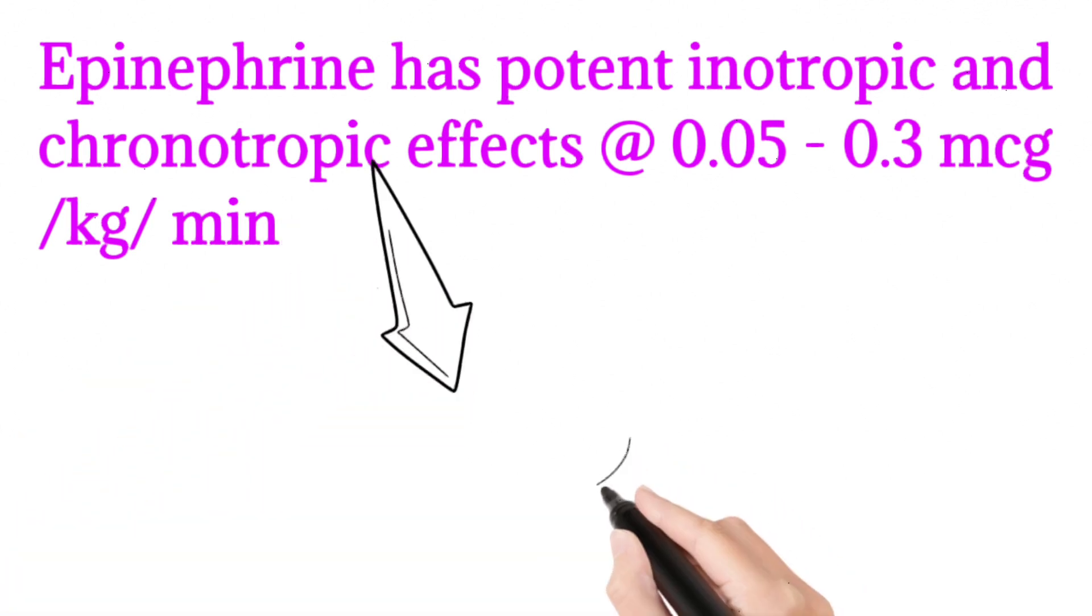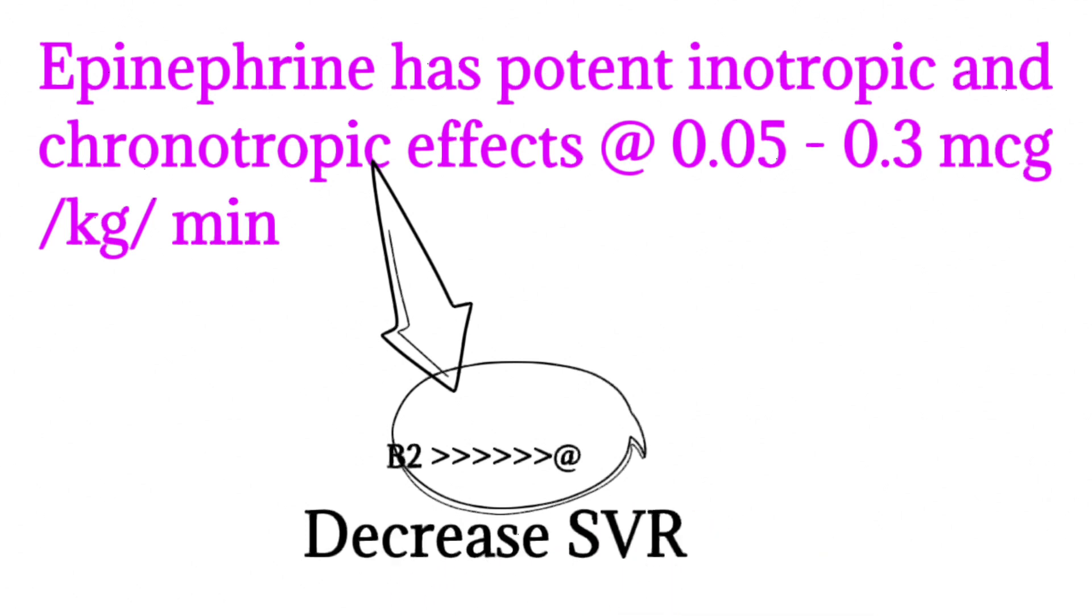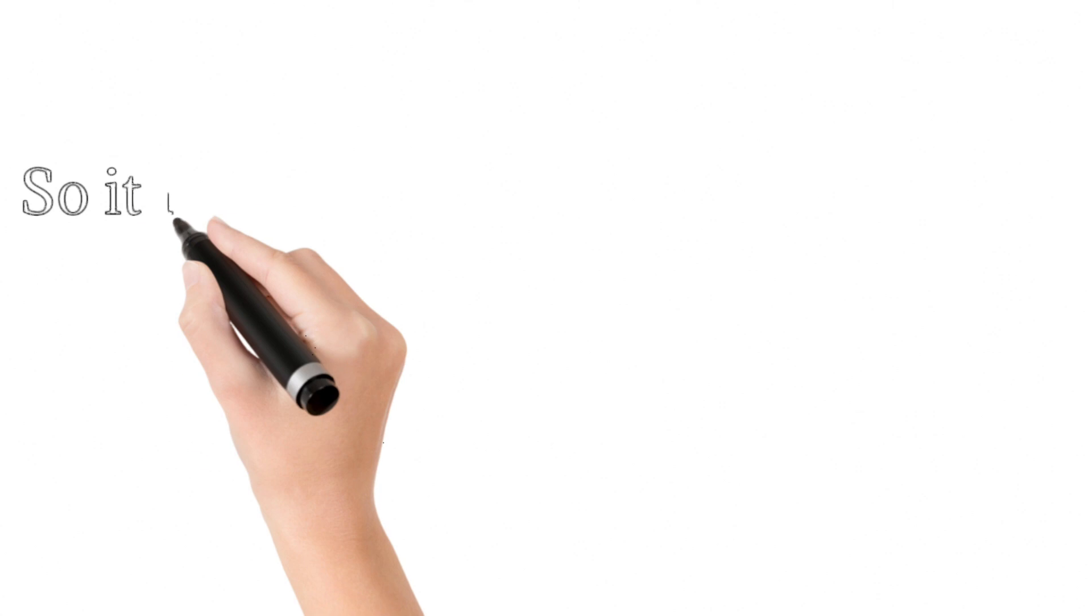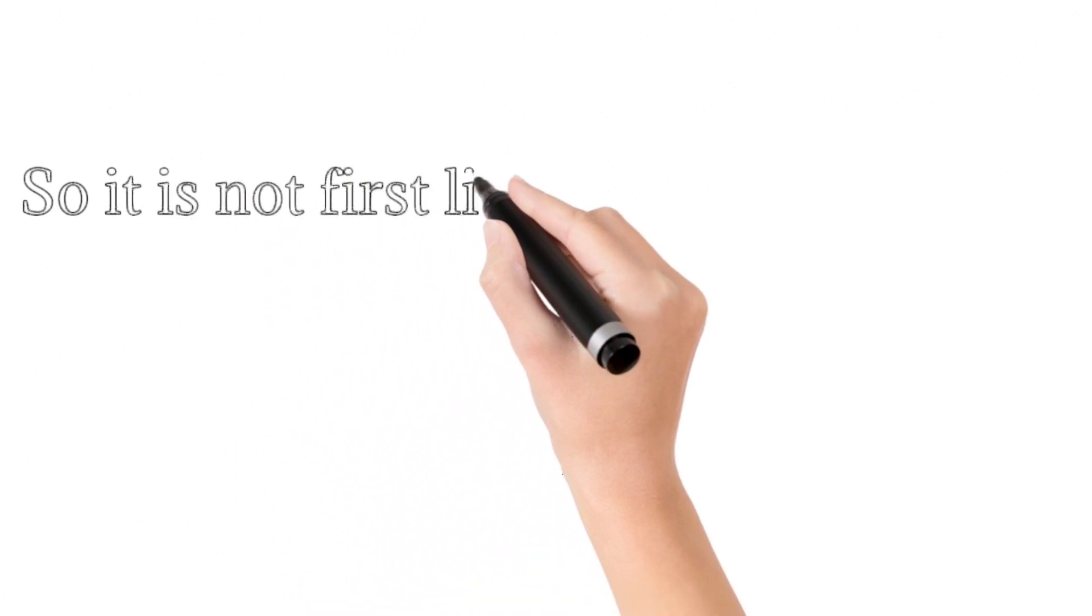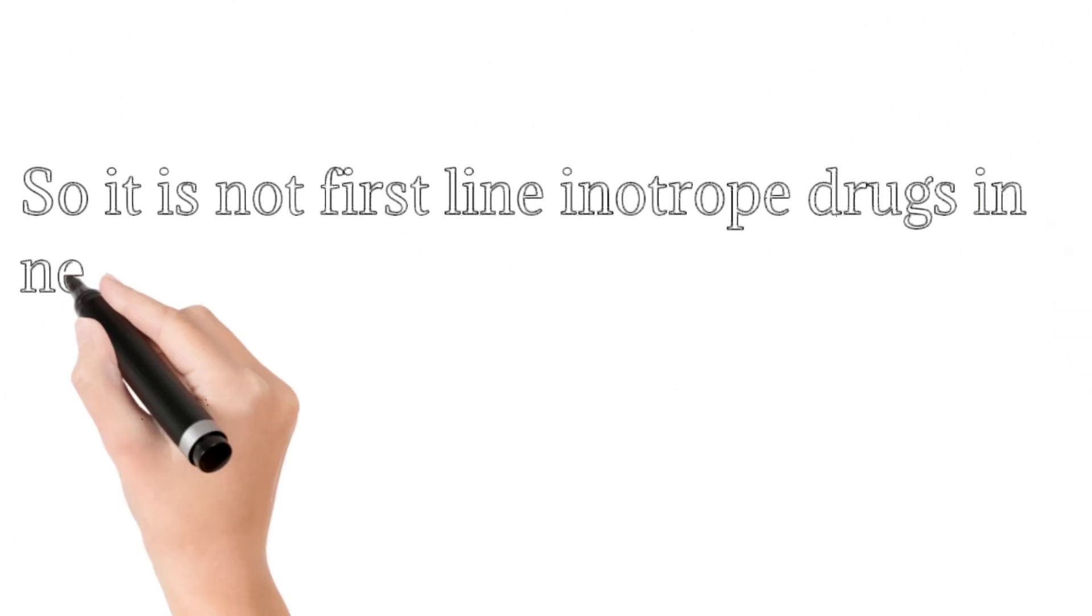Epinephrine has mostly beta-2 activity with very little alpha receptor activity, so it decreases systemic vascular resistance. Therefore, it is not a first-line inotropic drug in newborns.